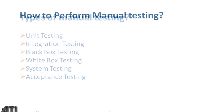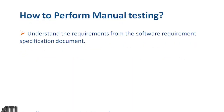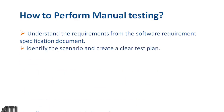How to perform manual testing — there is a certain process called the STLC, Software Testing Life Cycle. I'll talk briefly about the testing life cycle. The first step is to understand the requirements from the Software Requirement Specification document — understand the customer requirements and identify the scenarios, and create a clear test plan.